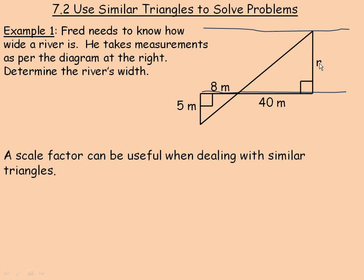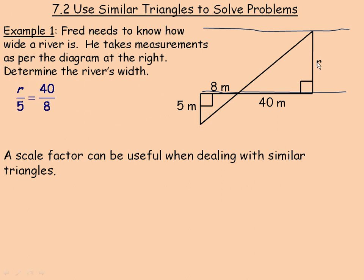Now we're going to set up a proportion to solve for r. The r side in the larger triangle corresponds to the 5 side in the smaller triangle, and the 40 side corresponds to the 8. The 40 is the side between the equal angle and the 90-degree angle, and the 8 is the corresponding side in the smaller triangle. So the ratio of r to 5 equals the ratio of 40 to 8.